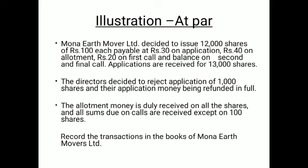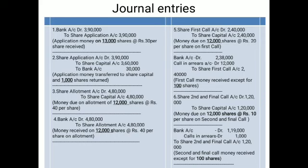We apply the fully rejected situation. The allotment money is duly received on all shares except one person who does not pay on 100 shares for the calls — meaning the first and final call. So call-in-arrears is also present. Moving to the solution: the first entry is the application money received for 13,000 shares at ₹30 per share. Bank account debit to share application account — ₹3,90,000.